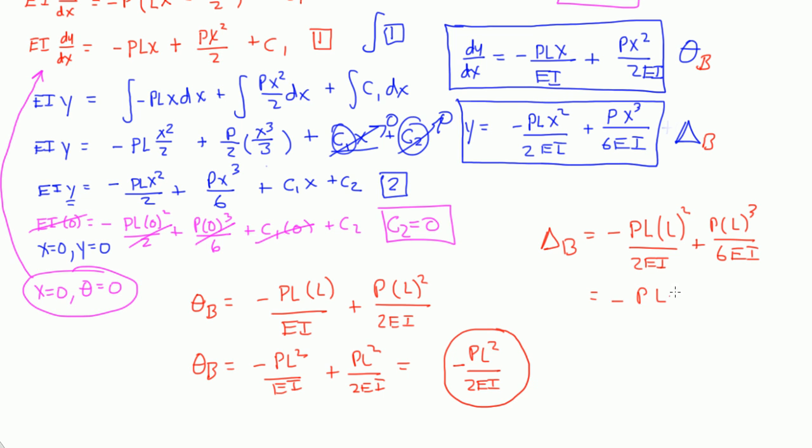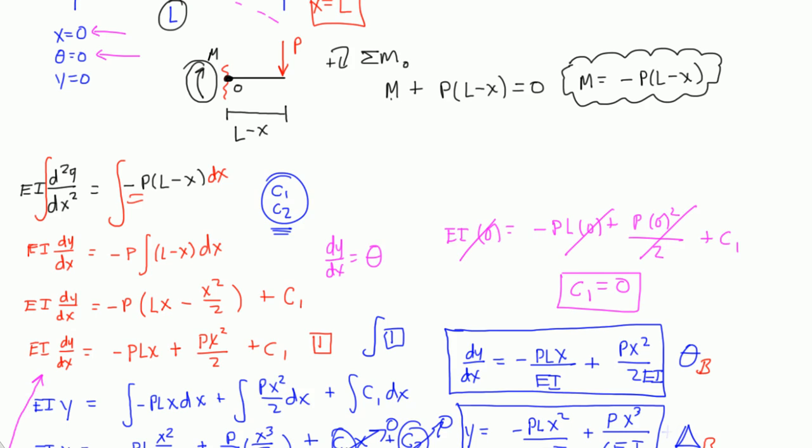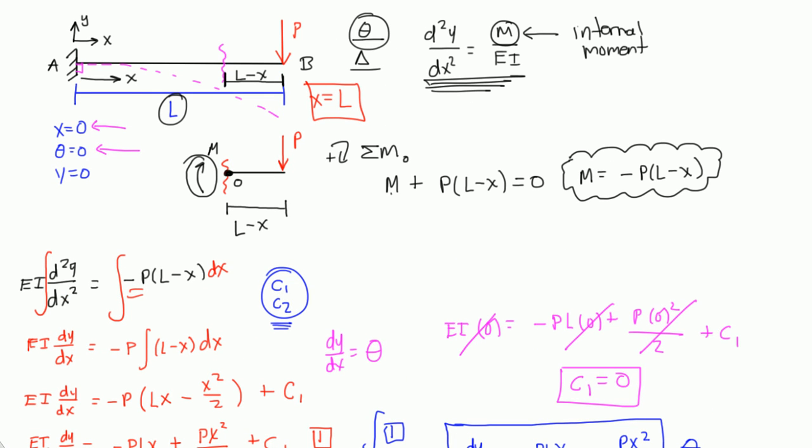We can simplify this down a bit. Negative PL cubed over 2EI plus PL cubed over 6EI. And if you combine these two terms together, you should get negative PL cubed over 3EI. So, this is the deflection at B. It's negative, it's going down. Negative PL cubed over 3EI.